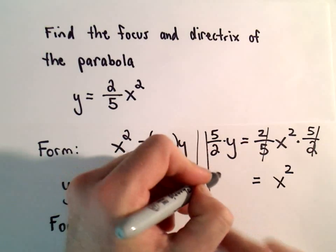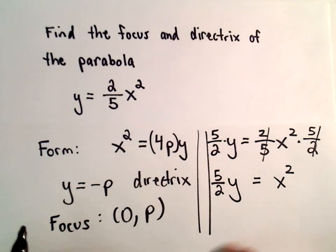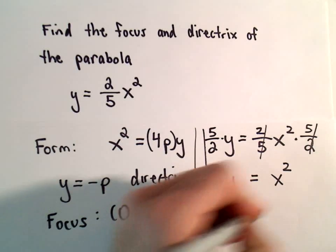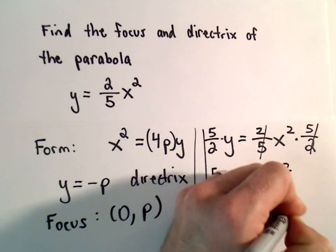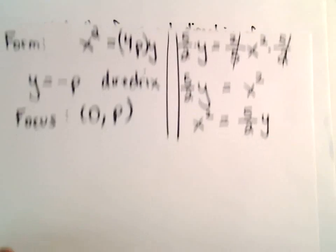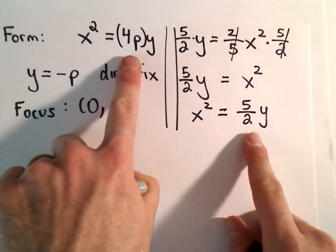And then we have just 5 over 2 times y. So now we've almost got it in this form, and maybe I'll just reorder it here. I'm going to write it as x squared equals 5 over 2 times y. Obviously, we don't have to do that, but I'm going to, just to make it look almost exactly like this.